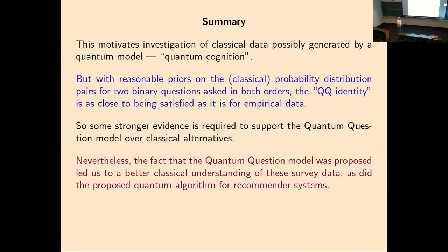Thank you. Can I ask about the determinants in the empirical data and the model? In the empirical data the determinants were always positive, whereas in the model you had to restrict both to be positive. Is that biased because the questions are so polarizing? No — it's just because of the order we write the columns. If we wrote the 'no' answer before the 'yes' answer, that would change the sign of the determinant. So it's just that they always write them in the order that makes it positive, though the product of the determinants is positive whether both are positive or both are negative.